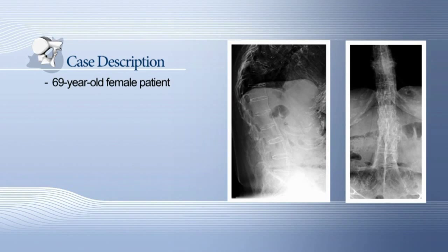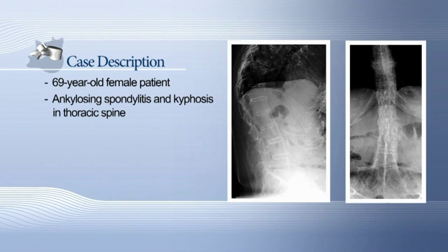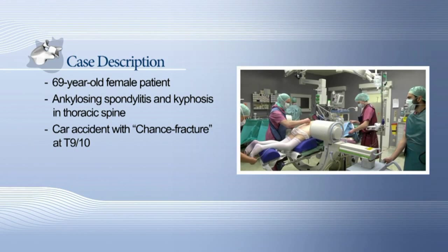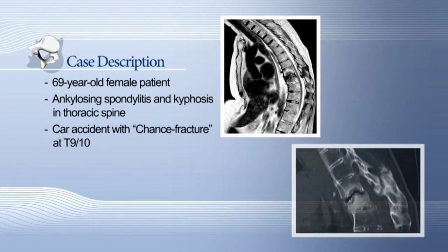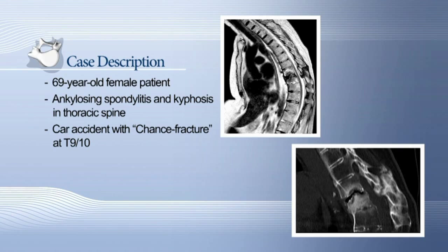The patient is a 69-year-old female. She has been diagnosed with ankylosing spondylitis and kyphosis in the thoracic spine but is mostly pain-free. She experienced pain after a car accident, and the fracture was not discovered during her first treatment. A radiological examination three months later revealed a chance fracture at the level T9-T10, which still shows hyper-intense signals in the MRI STIR sequences.